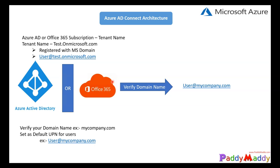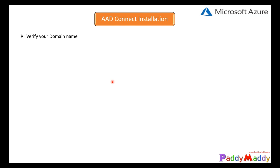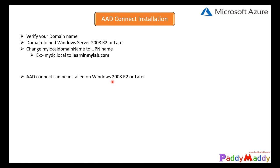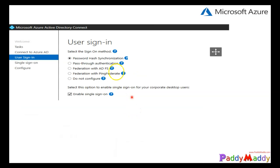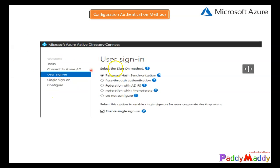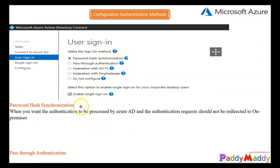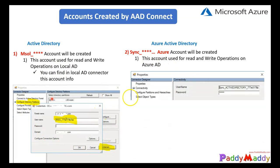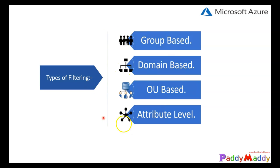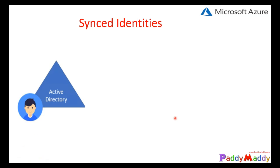Now we would be going further to understand more about AAD Connect specific sync service manager - that's the synchronization-specific rules and the involvement within that. We talked about AAD-specific pre-requirements, verification of a domain, and also tried to install AAD Connect with the option called password hash sync with single sign-on. All that was working fine, but we didn't go through in depth the filtering options, especially group-based, domain-based OU, or specific attribute level. We didn't talk much about sync-specific rules.